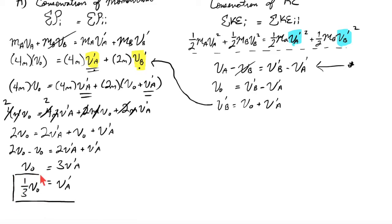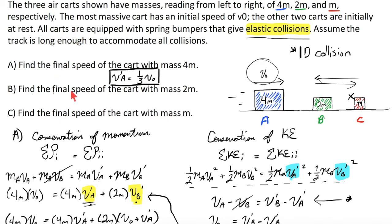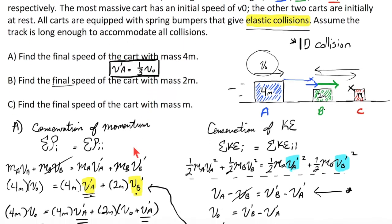Now, what I'm going to do is I'm going to isolate all the V prime A's. We have 2V0 minus V0 is equal to 2V prime A plus V prime A. V0 is equal to 3V prime A. And now, V prime of A, the final velocity of A, after hitting that first block, is just one-third of its initial velocity. The first part of this problem has been solved. Let's move on to part B, the final speed of the cart with mass 2M. Careful. This means after all of the collisions have taken place. Basically,